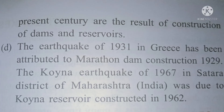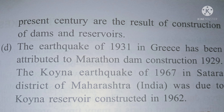Many earthquakes in the present century are the result of construction of dams and reservoirs. The earthquake of 1931 in Greece has been attributed to the Marathon Dam construction in 1929. The Koyna earthquake of 1967 in Satara district of Maharashtra was due to the Koyna reservoir constructed in 1962.